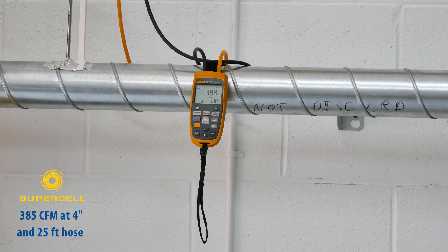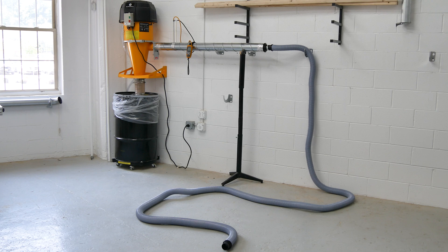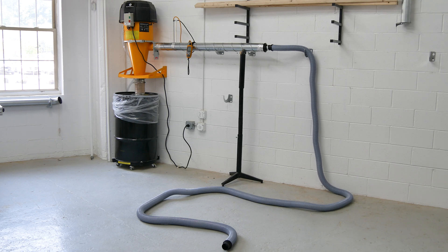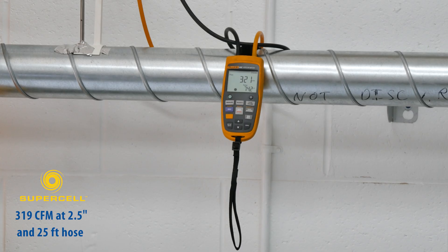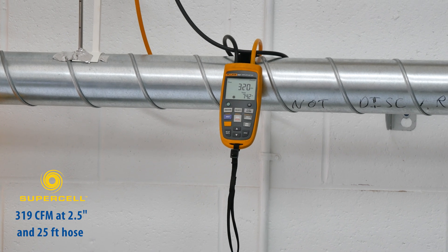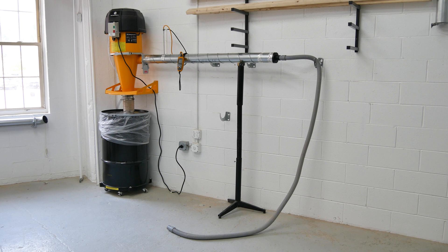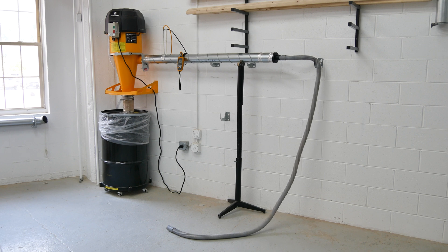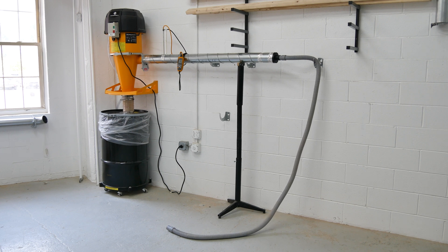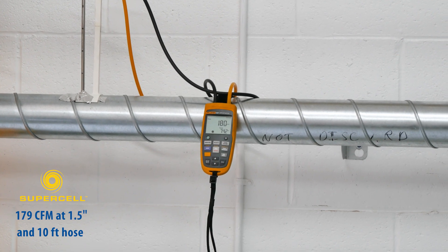Next, we reduce the port size to 2.5 inches, a common size on the majority of today's benchtop and portable tools. At 25 feet of 2.5-inch diameter hose, the Supercell's CFM is 319. For our final test, we further reduce the port size to 1.5 inches with a 10-foot hose. The Supercell measures 179 CFM.